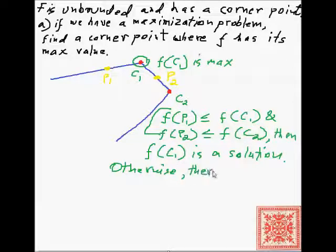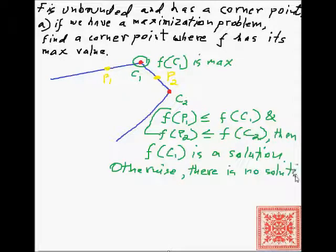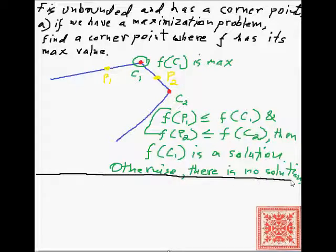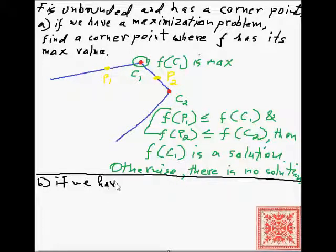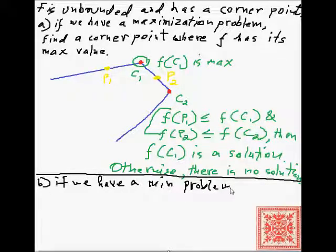So f of p1 has to be less than or equal to f of c1, and f of p2 has to be less than or equal to f of c1. Otherwise there is no solution. We choose two points and make sure that the value of the objective function at both of them is less than or equal to the value at the corner point where the lines meet.